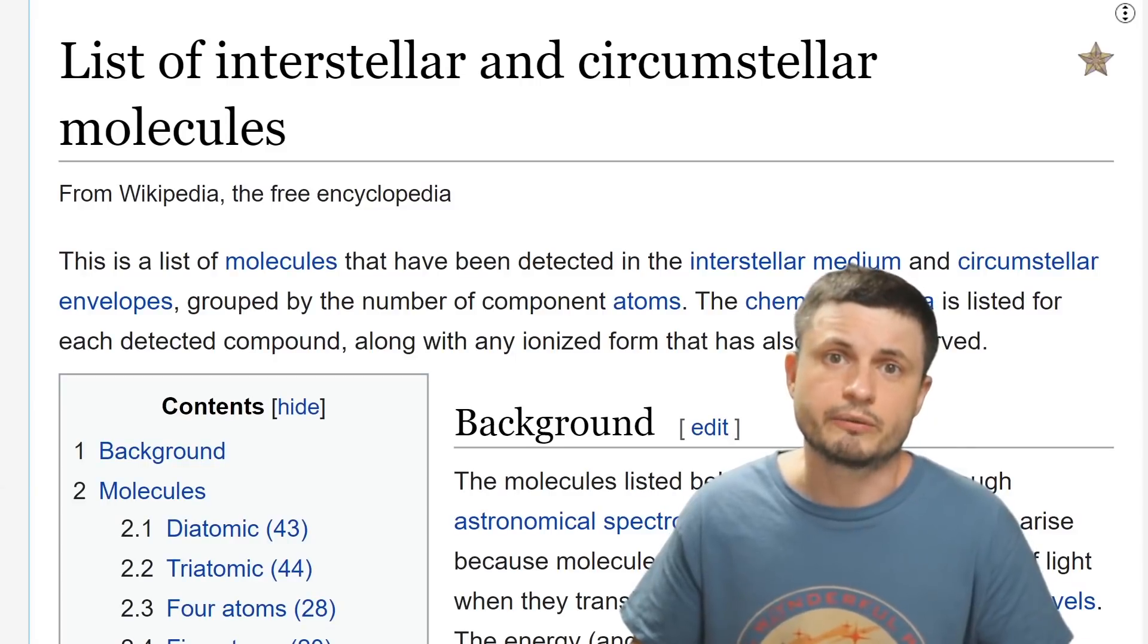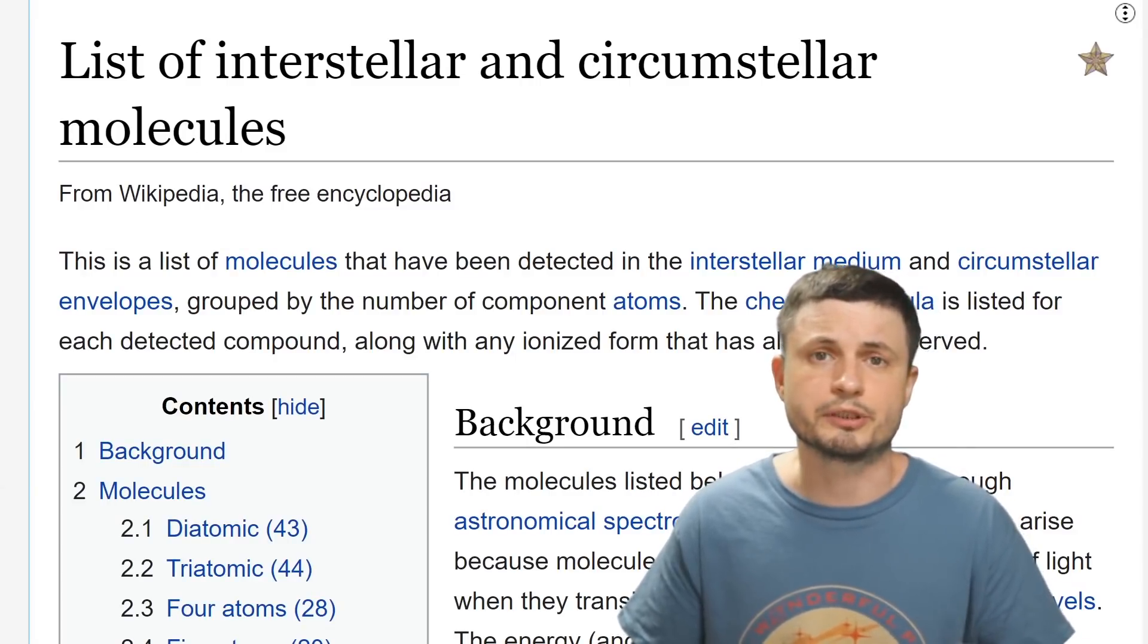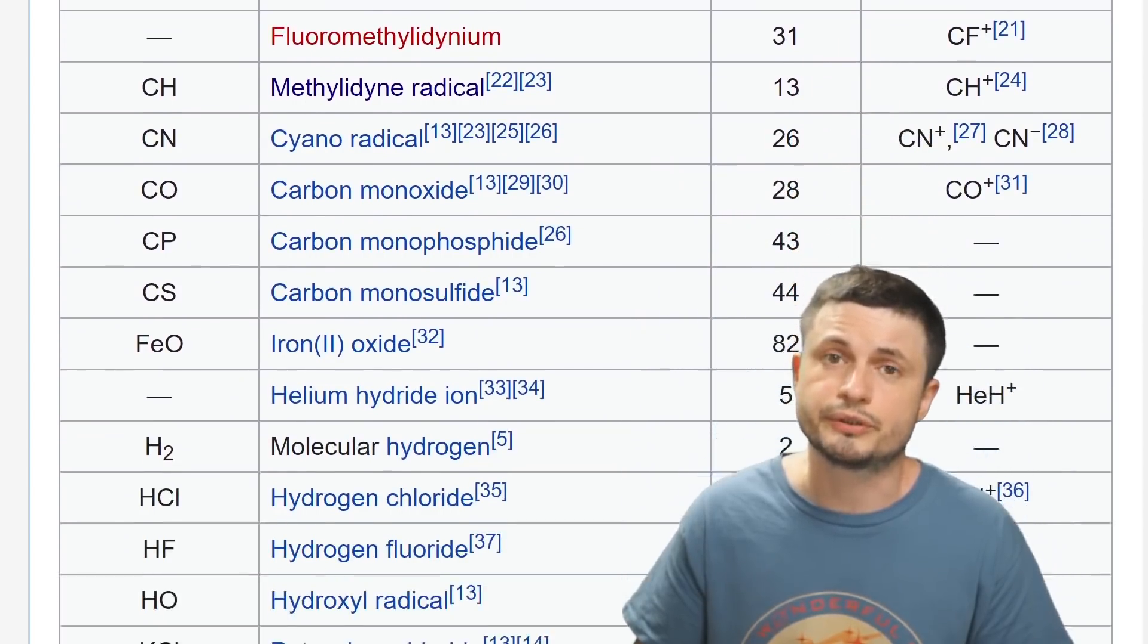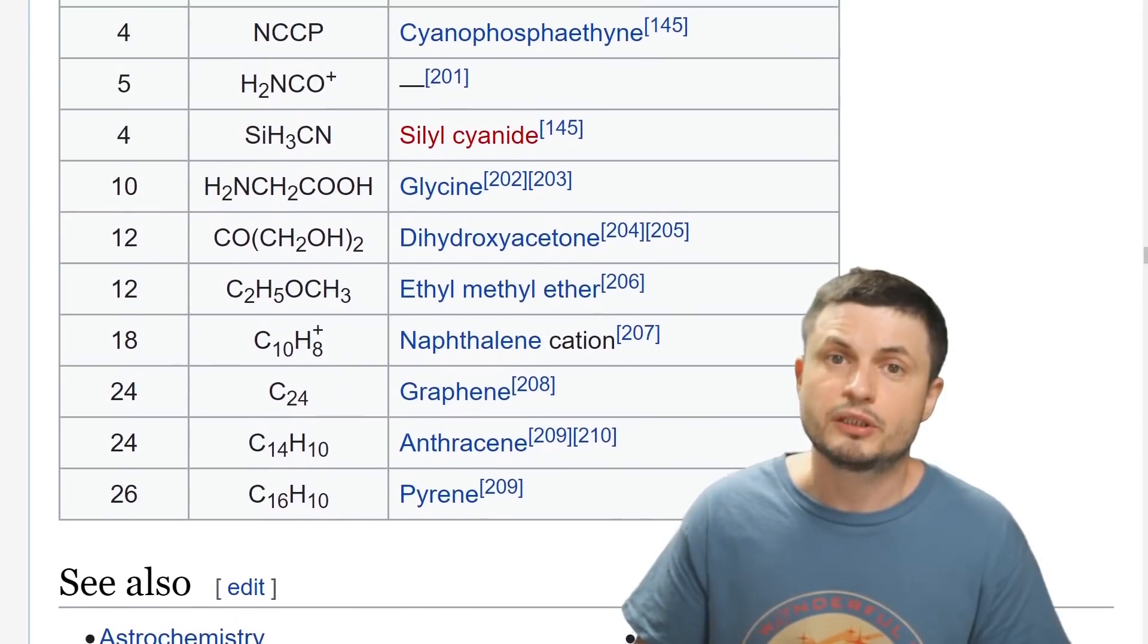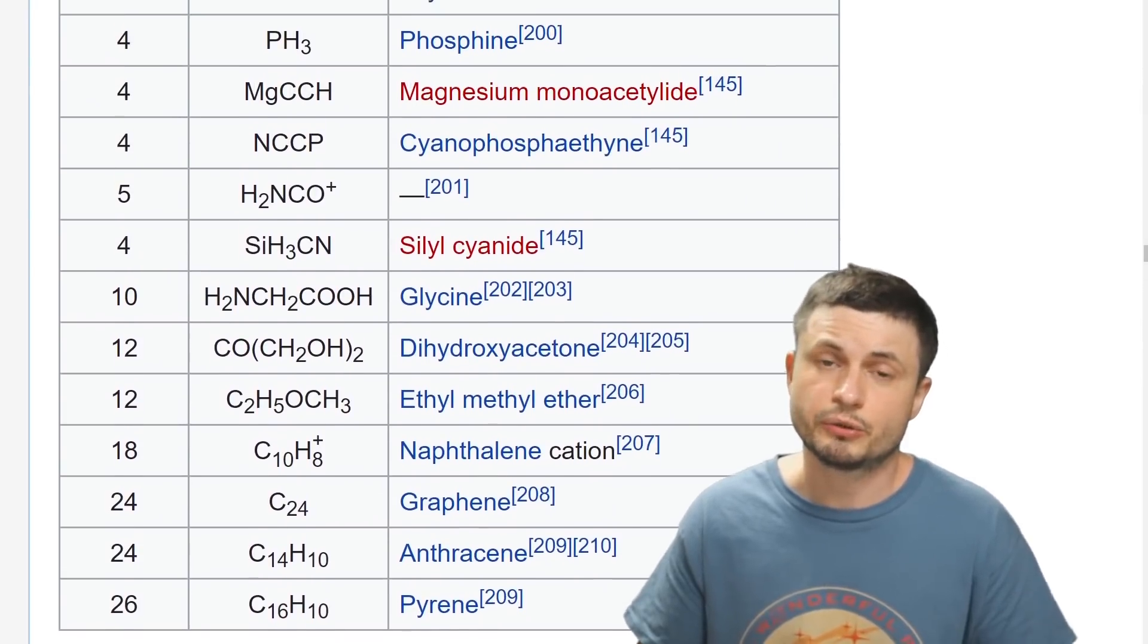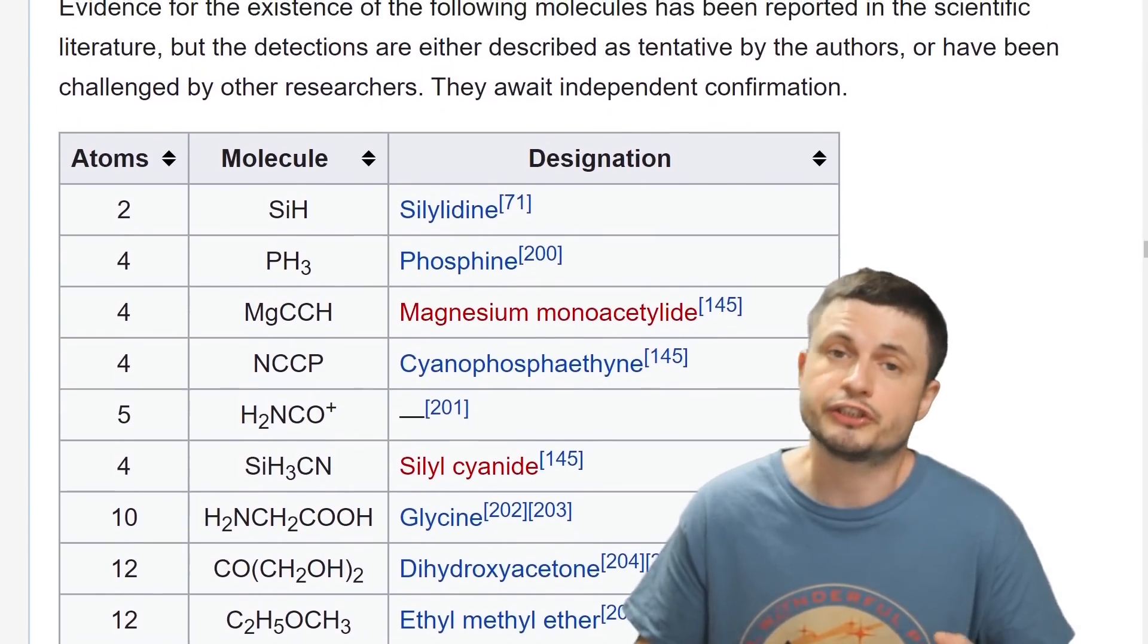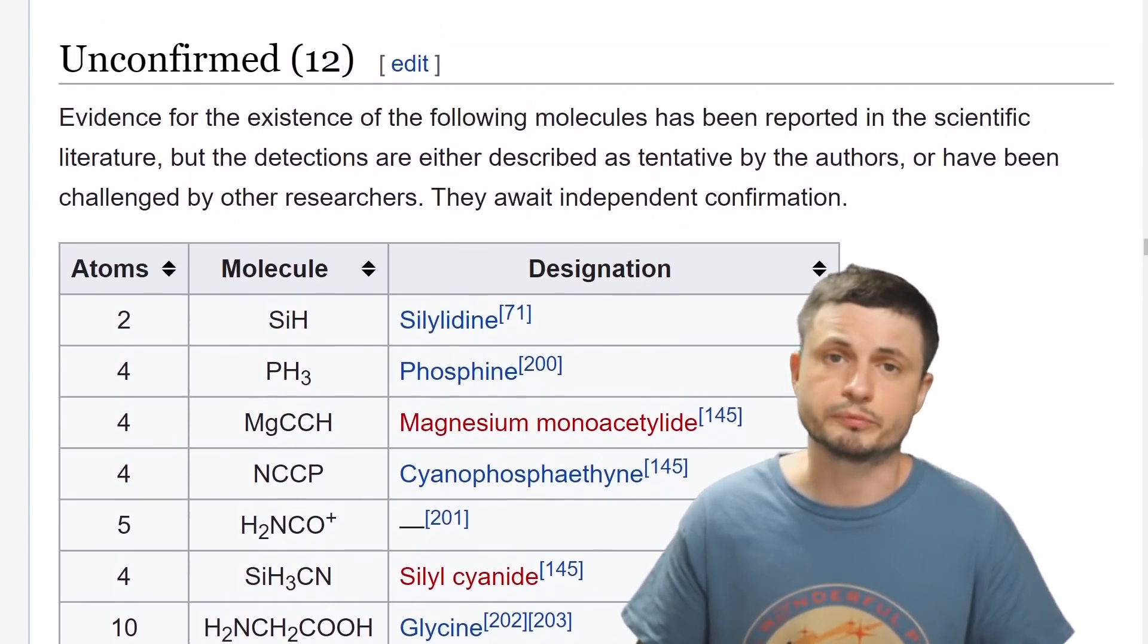And I guess let's start right here, you can find this link in the description below. There's already an entire list of various organic molecules and a lot of really complex molecules that have been already found around various asteroids, around various types of molecular clouds or essentially just in outer space, outside of our own planet.